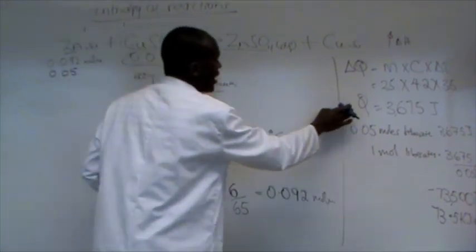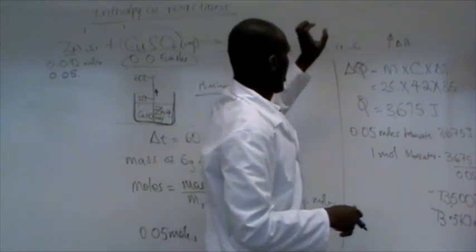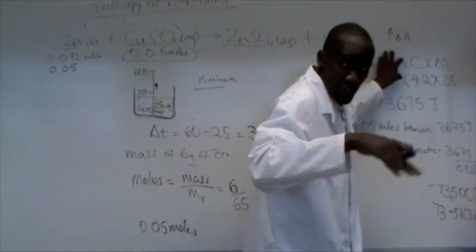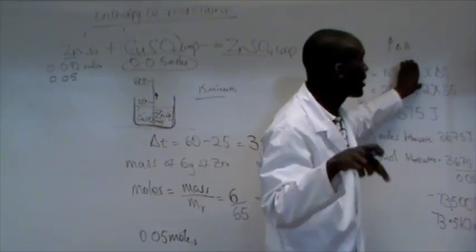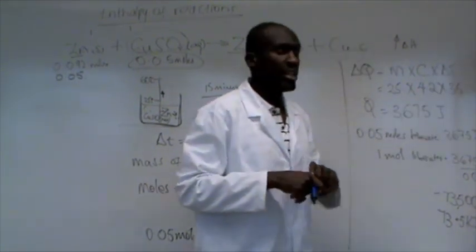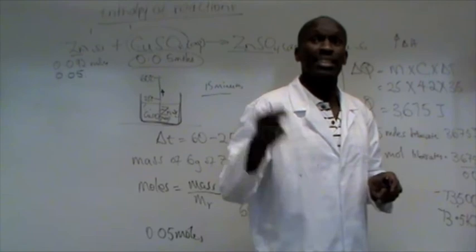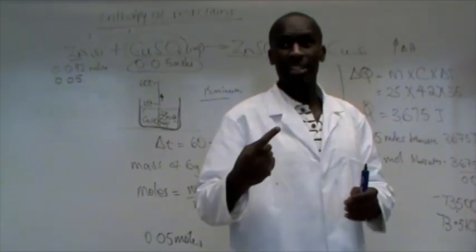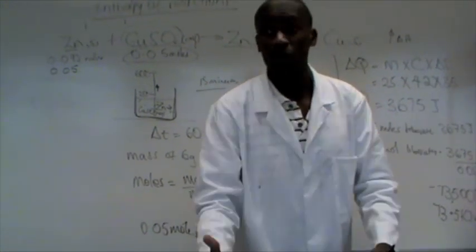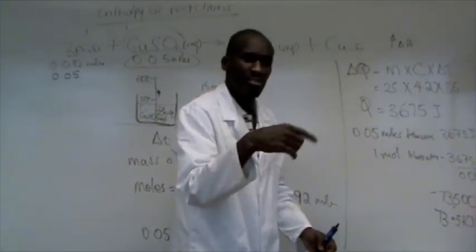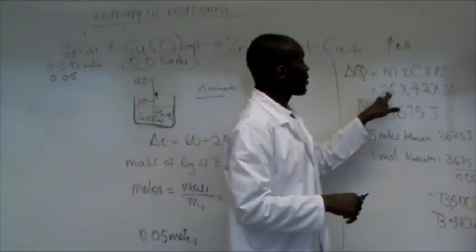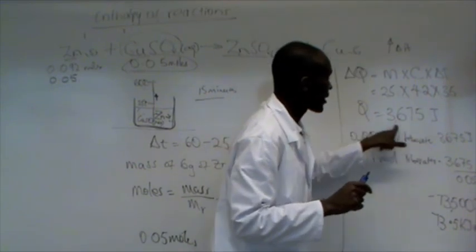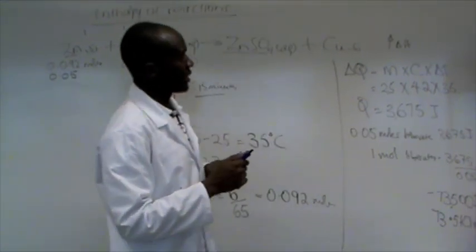Now, that's going to help us where we come and say, okay, the heat that was given up is given by the mass of the solution times the specific heat capacity times the change in temperature. We assume that the specific heat capacity is that of water. Because when we get the copper sulfate, we dissolve it in distilled water. And much of that solution is basically water. And very little of the copper sulfate which has dissolved therein. So when we multiply the mass of the solution by the specific heat capacity and the change in temperature, what we get is 3675 joules.